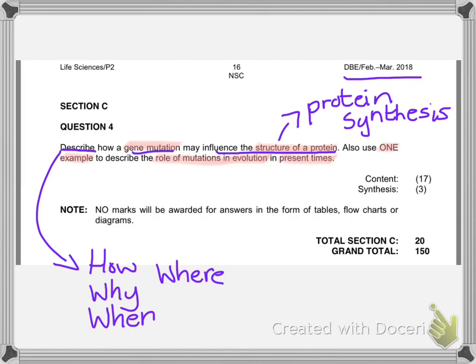Your first paragraph is going to describe what a gene mutation actually is. Spend two or three sentences explaining that a gene mutation is a change in the order of nucleotides that may result in a different amino acid being formed, which could then result in a different structural protein. You also need to mention where and when this happens — gene mutations generally occur during DNA replication or during transcription in protein synthesis.